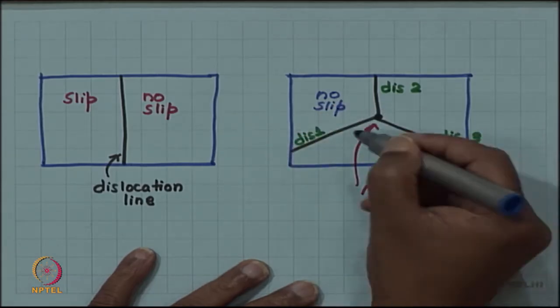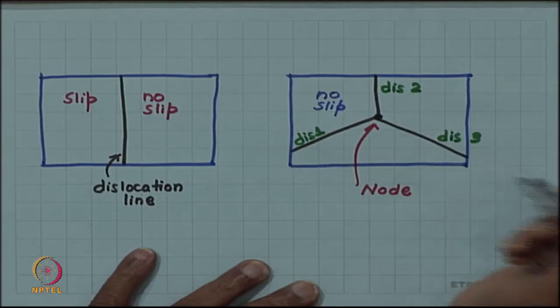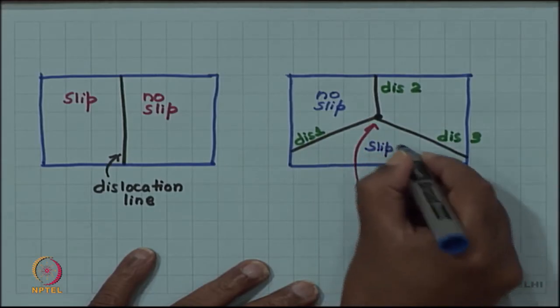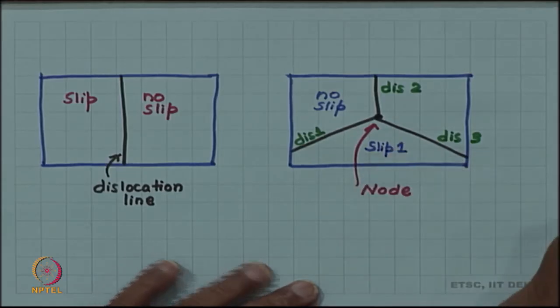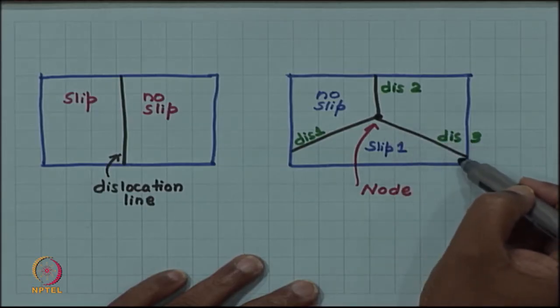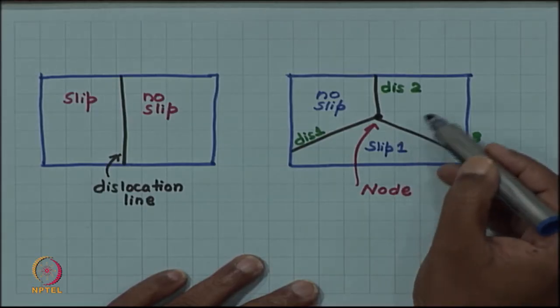Which means if I cross dislocation line 1, I will come to a slip region. So this will be slip 1, but now when I cross dislocation line 3 again there should be a slip.